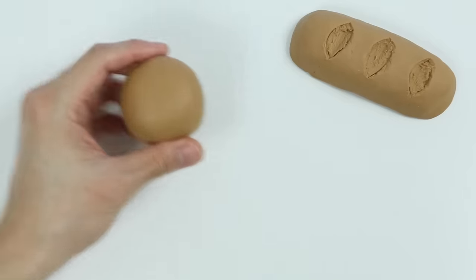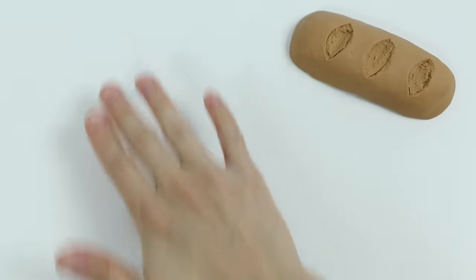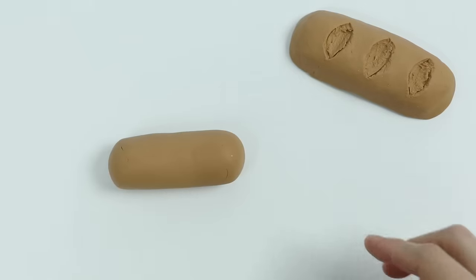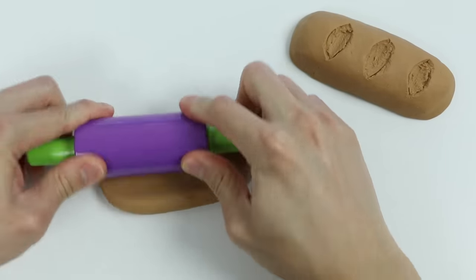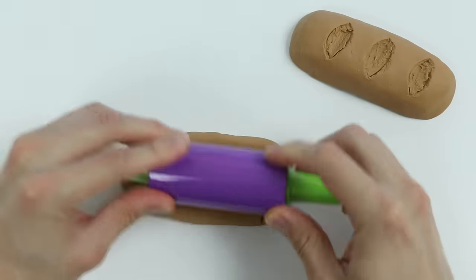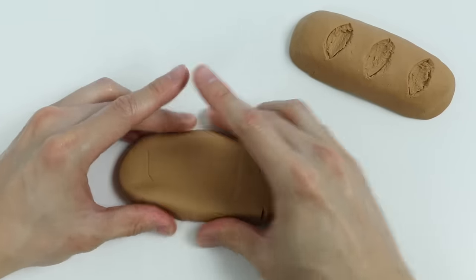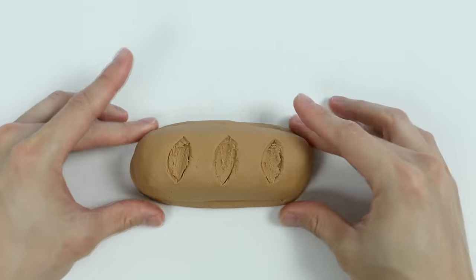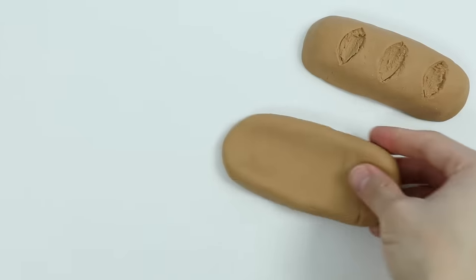Perfect, we made the top bread. Now let's make the bottom bread. Let's make the same shape as before. Now let's use this roller to flatten it out. Now let's shape this a little bit, make sure the top matches the bottom.